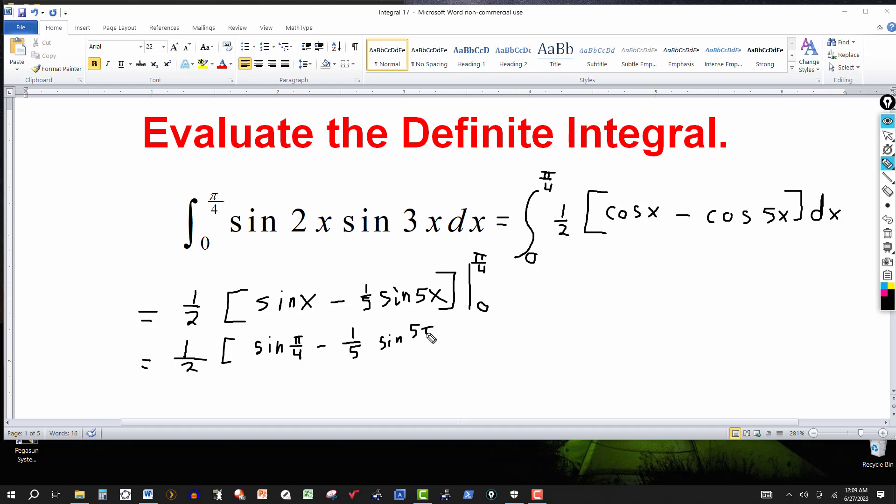That'll be 5 pi over 4. And that's going to be the expression evaluated at 0. So this will be minus.